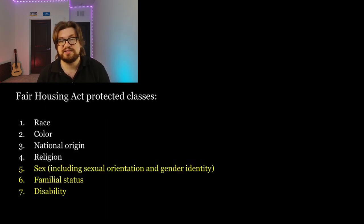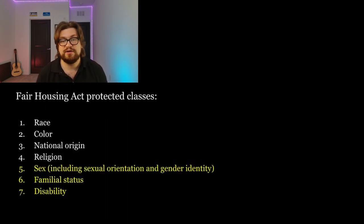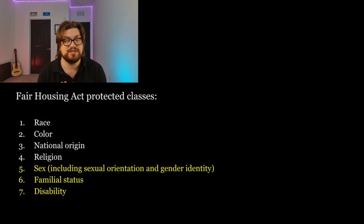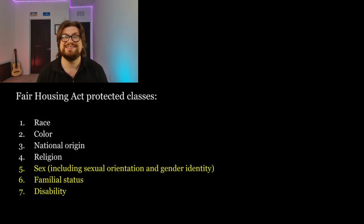Today, there are seven protected classes which include the following: race, color, national origin, religion, sex — including sexual orientation and gender identity — familial status, and disability.